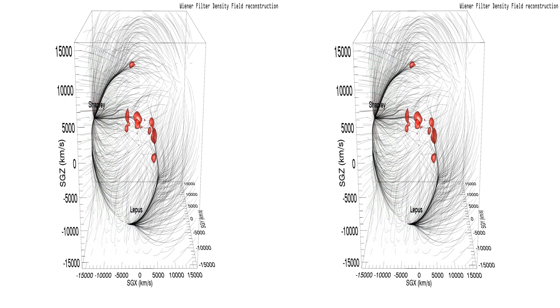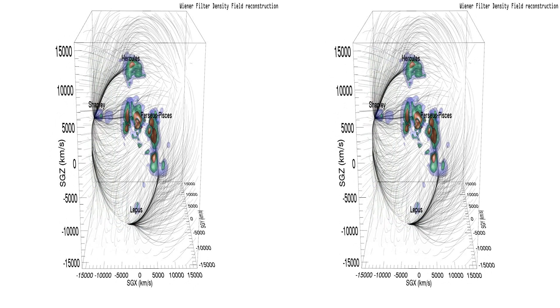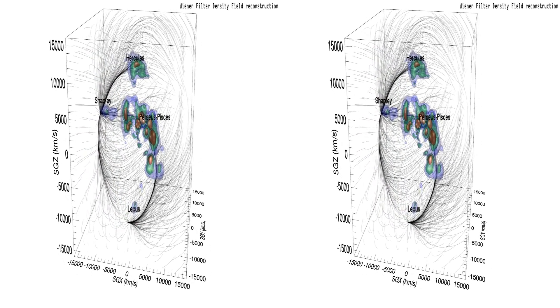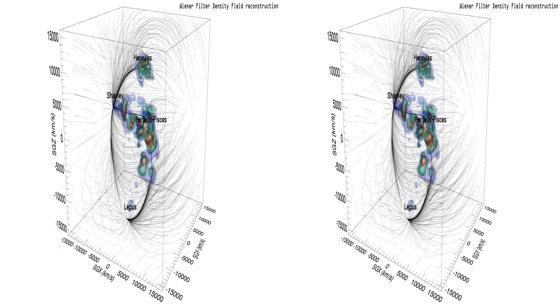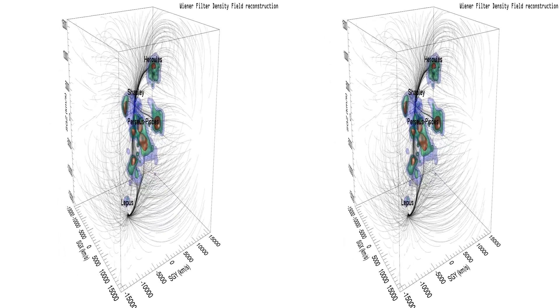Contours transition to the Wiener filter over density field. Contours are prominent near the center, where the peculiar velocity information is dense and accurate, but diminishes at large distances from the center, where information is sparse and uncertain.